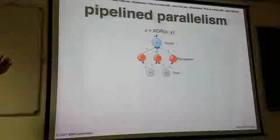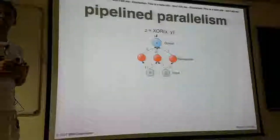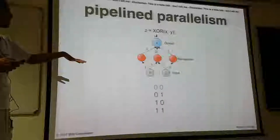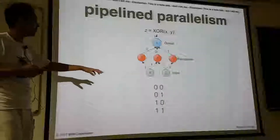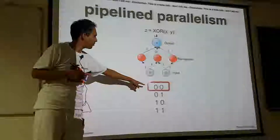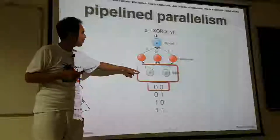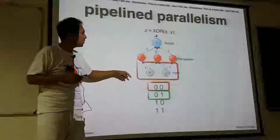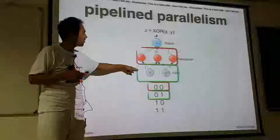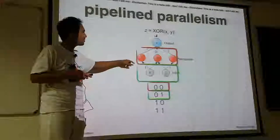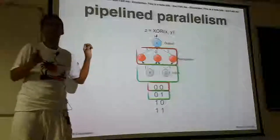And last, there is pipeline parallelism — this is the way data is processed in neural networks. You take your input dataset, take the first row, compute it in the first layer, then take the second row and compute it in the first layer. Now in parallel, you compute the result of the first row in the second layer. That's pipeline parallelism.